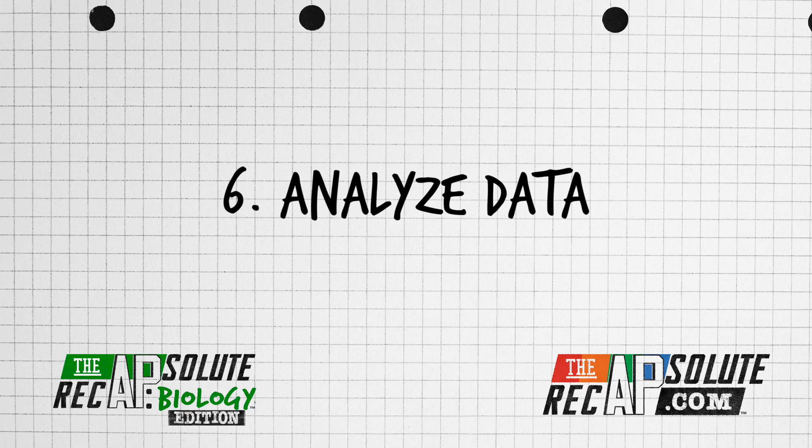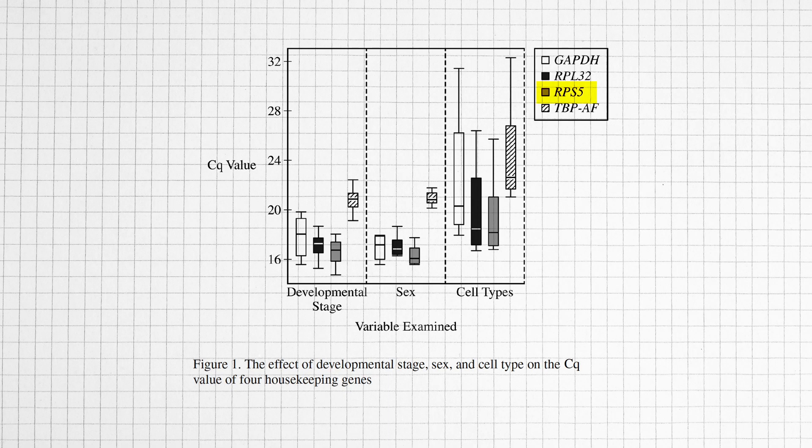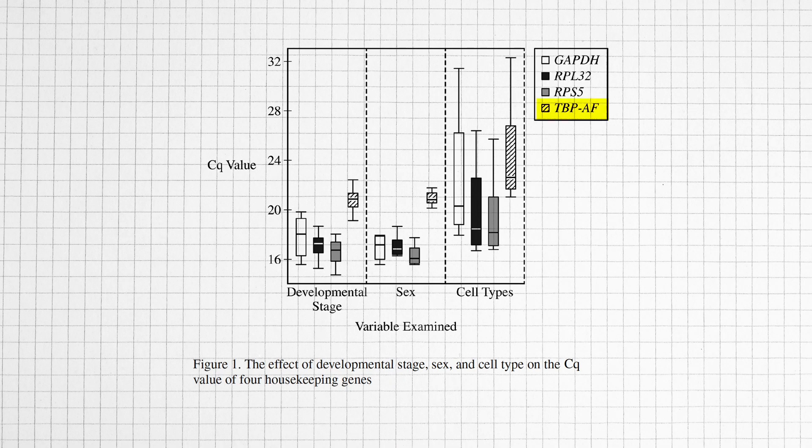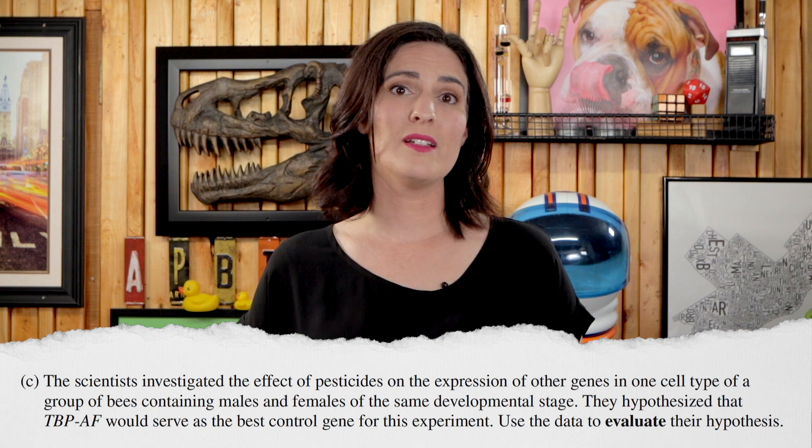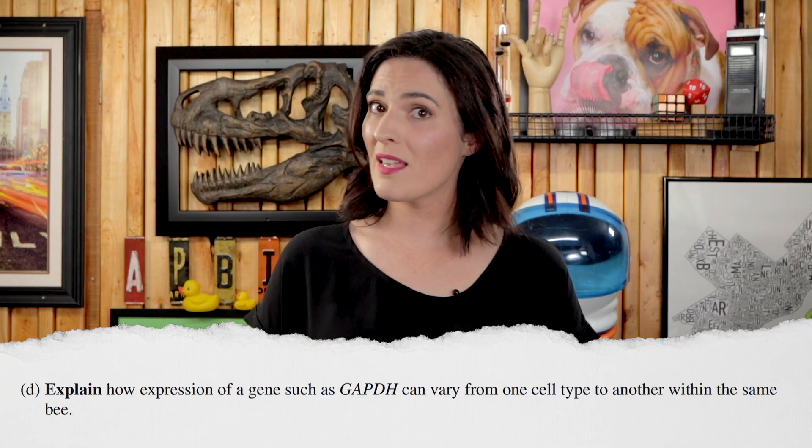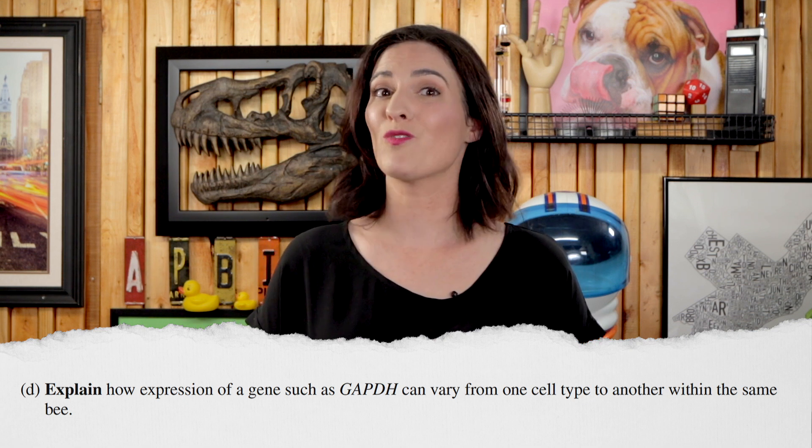Question six is analyze data — pesticides, bees, and what I believe is the first box-and-whisker plot for an AP Bio FRQ since the redesign. For part A, the RPS5 gene had the lowest median CQ value when bees at different developmental stages were compared. For part B, the TBPAF gene has the lowest level of gene expression regardless of the variable. In C, the hypothesis is supported: when bees of different sexes were compared, TBPAF had the narrowest range of CQ values with medians that were roughly equivalent and had no overlap — these all indicate that TBPAF expression is least affected by sex and makes the best control. And lastly, question six part D: gene expression can vary from one cell type to another within the same bee due to different transcription factors from cell differentiation.